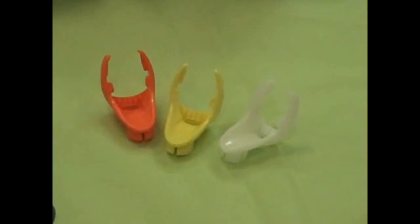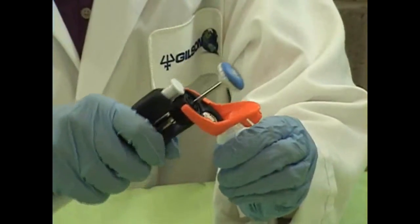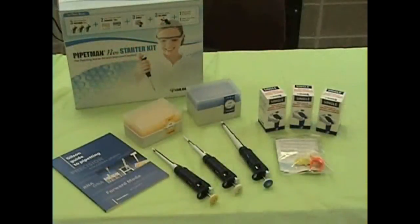The Jemmie Microtube Opener is attached to your Pipetman Neo pipette and helps you open both flip-top and screw-top microcentrifuge tubes with ease, saving your fingers and thumbs from the wear and tear of opening lots of tubes.